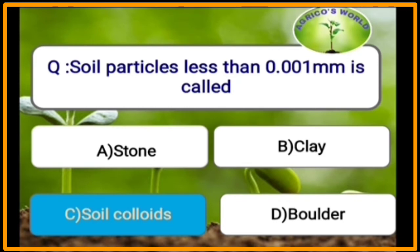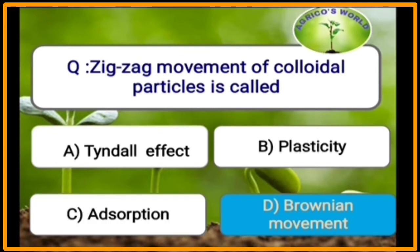Soil particles less than 0.001 mm are called soil colloids, whereas soil particles more than 0.001 mm are called clay. The zigzag movement of colloidal particles is called Brownian motion, which is due to the imbalanced impact of solvent molecules on colloidal particles.